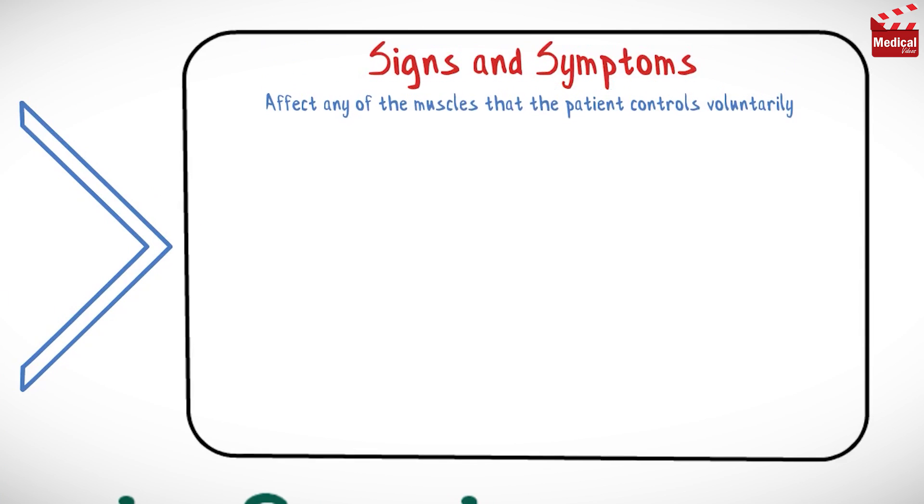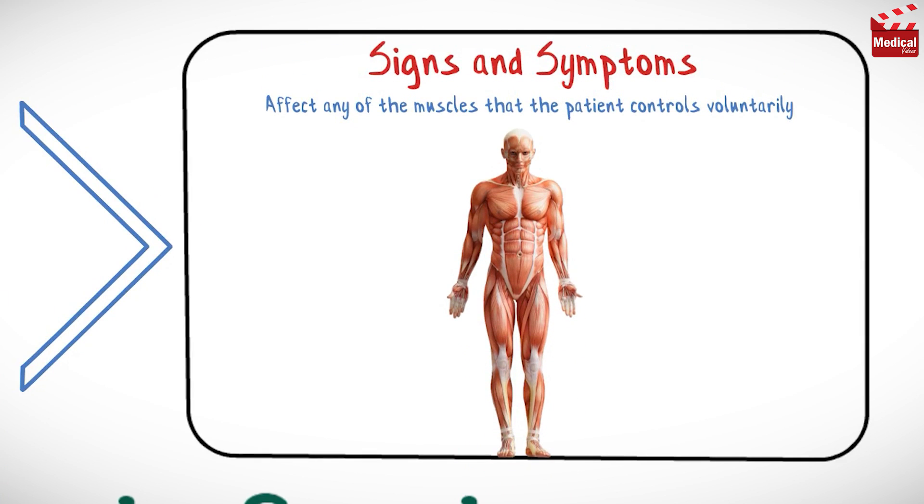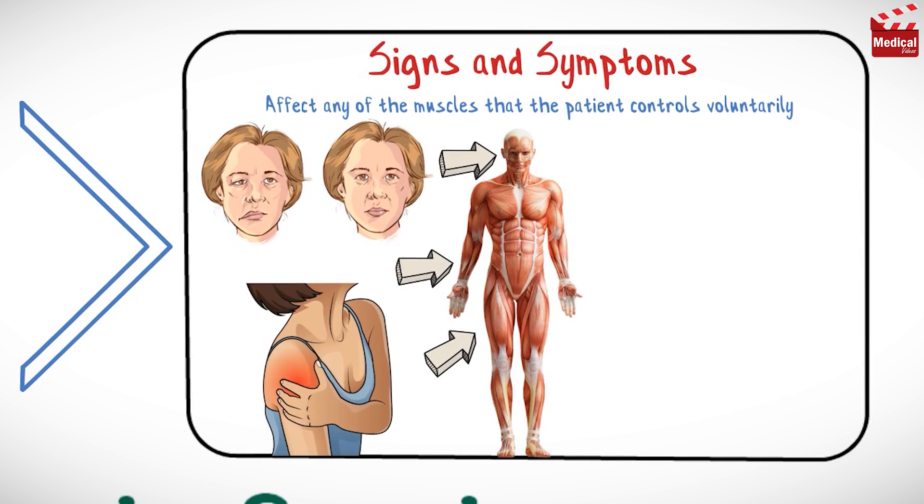Myasthenia gravis can affect any of the muscles that the patient controls voluntarily. It most commonly affects certain muscles including those of the face and eyes, arms and legs, and those muscles involved in chewing, swallowing, and talking.